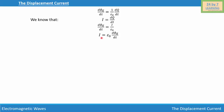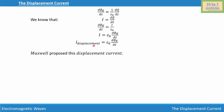This current I is known as displacement current. So, I-displacement equals epsilon-zero times d-phi-E over dT. This was proposed by Maxwell, who realized that there is something wrong with Ampere's Law, and this is the displacement current.